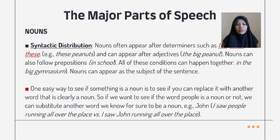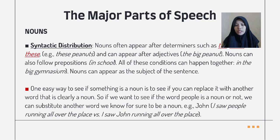Syntactic distribution: nouns often appear after determiners such as 'the,' 'those,' 'this,' — for example, 'this peanuts' — and can appear after adjectives: 'the big peanut.' Nouns can also follow prepositions: 'in school.' All of these conditions can happen together, for example: 'in the big gymnasium.' Nouns can appear as the subject of a sentence. One easy way to see if something is a noun is to see if you can replace it with another word that is clearly a noun. So if we want to see if the word 'people' is a noun, we can substitute another word we know for sure to be a noun.